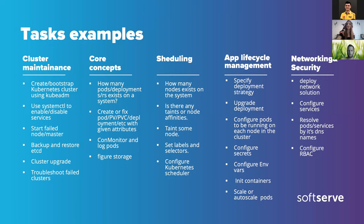Tasks on application lifecycle management include specifying a deployment strategy, upgrading or scaling a deployment, configuring pods to run on each node in a cluster, and configuring secrets and ConfigMaps. You need to know how to work with init containers and how to scale or auto-scale pods. For networking security, tasks include deploying a network solution, configuring services and setting proper types, understanding how DNS works, resolving a pod by its DNS name, and configuring role-based access control.